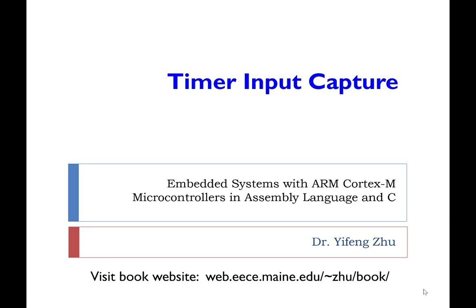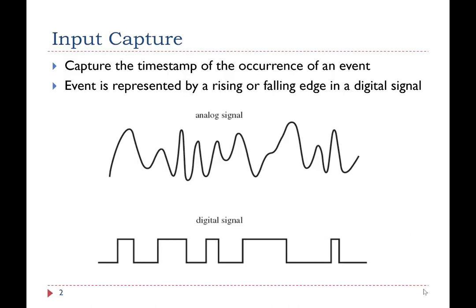As the name implies, input capture is to capture the timestamp of the occurrence of an event in a digital signal. The occurrence of an event is represented by a signal edge, including a rising edge, a falling edge, or either a rising or falling edge.